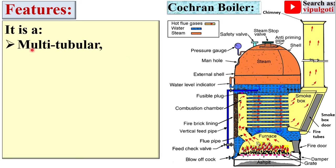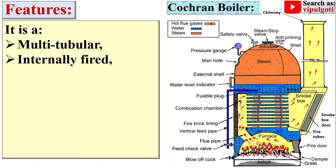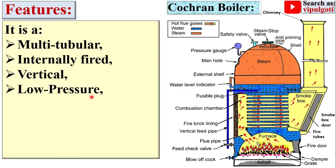First, it is a multi-tubular boiler — you can see there are a number of tubes, so it is called a multi-tubular boiler. It is called an internally fired boiler because the furnace is inside the boiler shell. The boiler shell is in a vertical position, so it is also called a vertical boiler.